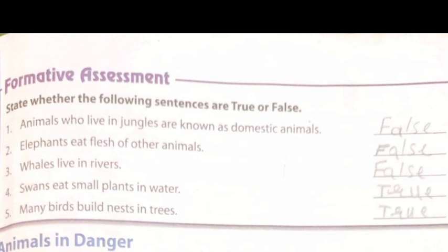Formative assessment — state whether the following sentences are true or false. 1. Animals who live in jungles are known as domestic animals — False. 2. Elephants eat flesh of other animals — False. 3. Whales live in rivers — False. 4. Swans eat small plants in water — True. 5. Many birds build nests in trees — True.